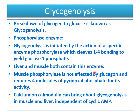Muscle phosphorylase is not affected by glucagon, but liver phosphorylase is affected by glucagon. Muscle phosphorylase requires 4 molecules of pyridoxal phosphate for its activity. Additionally, calcium ion and calmodulin can bring about glycogenolysis in both muscle and liver, and this mechanism is independent of cyclic AMP.